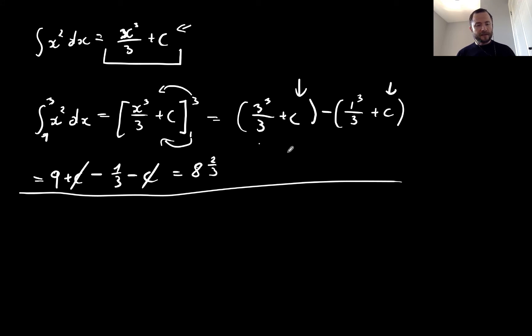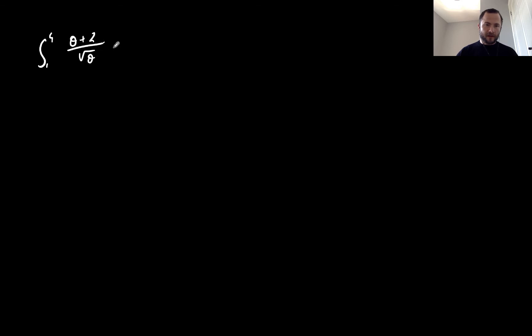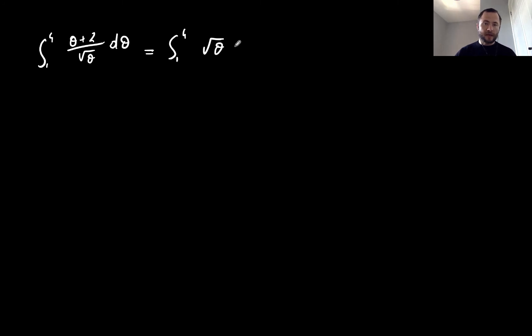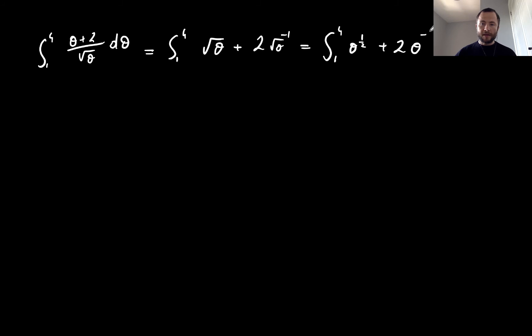Let's look at a couple more examples. I'm integrating between 1 and 4 the function (θ + 2) over root θ, dθ. To integrate that I'll separate this into two fractions with denominator root θ: root θ over root θ is simply root θ, and 2 over root θ can be rewritten as 2θ to the minus one half. So the integrand becomes θ to the power of one half plus 2θ to the minus one half, between 1 and 4.